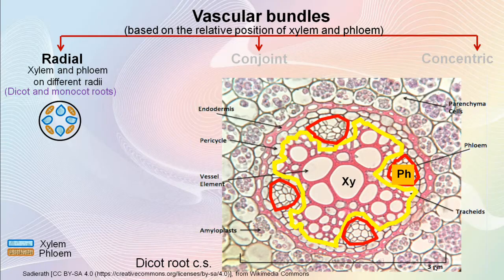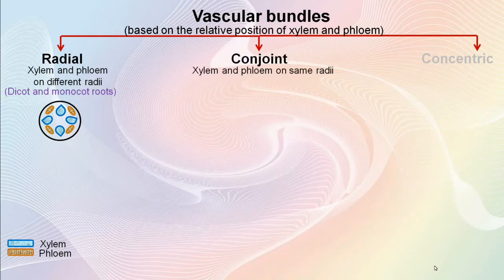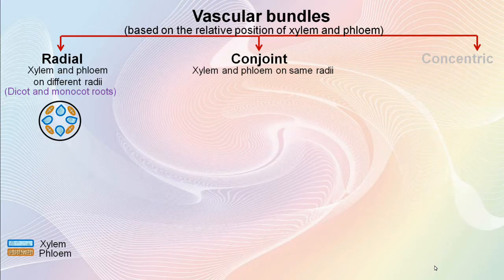Now let's see what a conjoint vascular bundle is. The name conjoint itself says that the xylem and phloem are seen joined together on the same radius. While radial vascular bundles are seen in roots, conjoint type vascular bundles are seen in stems and leaves.